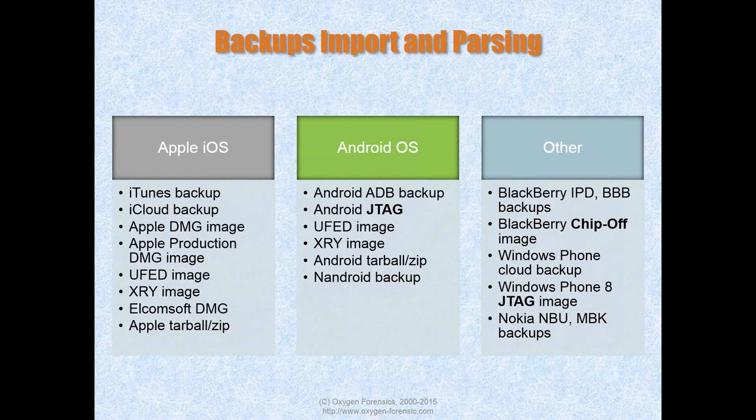Here's an overview of what we can import: lots of Apple iOS images including iTunes, iCloud, and DMG images; Android images including Android GTAC — since many people are now taking GTAC courses; Android backups, Android ZIP, and so on. You can also import BlackBerry chip-off images, which are quite popular nowadays, and Windows Phone 8 GTAC as well.